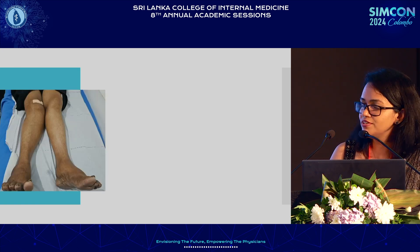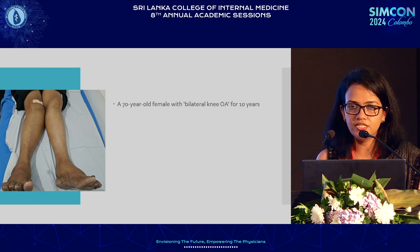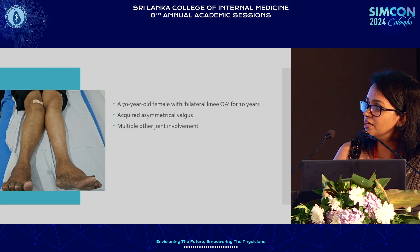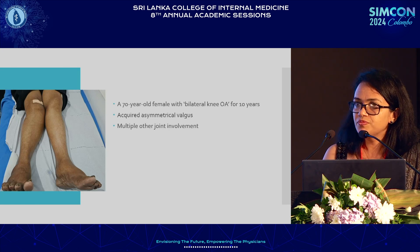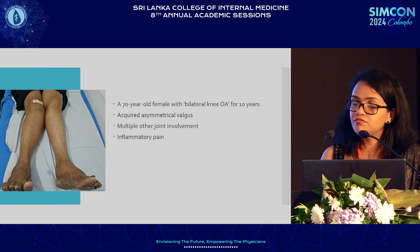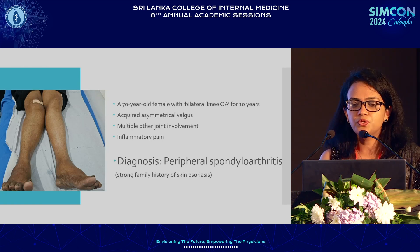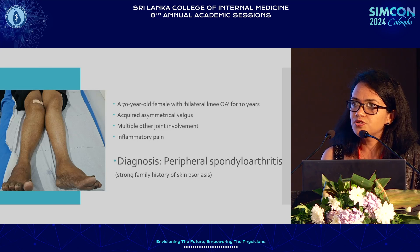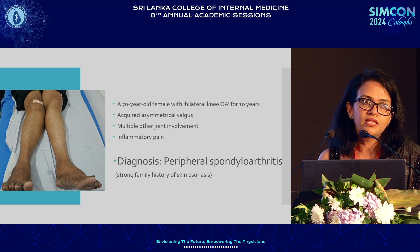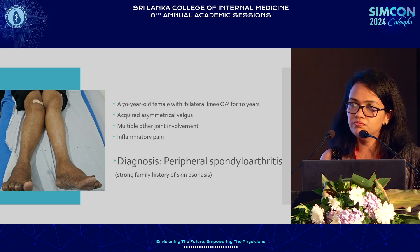This is the lady whose legs you saw on the first slide — a 70-year-old female with bilateral so-called osteoarthritis for about 10 years, onset at age 60. She had an acquired asymmetrical valgus deformity. If you look carefully at the picture, not only the knees are involved — the ankles are swollen too. On the rest of the examination, she had bilateral DIP joint involvement as well. The history was inflammatory pain, worse in the morning, getting better towards the middle of the day. The diagnosis was peripheral spondyloarthritis, and she had a strong family history of skin psoriasis, making this most likely psoriatic arthritis. In about 10% of psoriatic arthritis patients, they never develop skin or nail lesions — they may just have a strong first-degree family history.